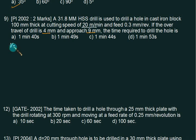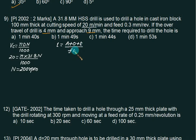First we have VC equals pi DN by 1000 in meters per minute. VC is 20, pi D is 31.8 into N divided by 1000, which gives 200 RPM. L using approach plus over travel plus thickness divided by F into N.